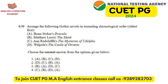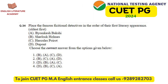The 33rd question asks students to arrange some gothic novels in ascending chronological order by year of publication. This can be tricky as three of the four novels are 18th century while one is 19th century, which may confuse unprepared students. The 34th question follows the same pattern, requiring detective fiction to be arranged chronologically by year of publication.